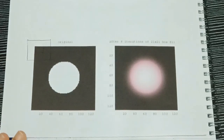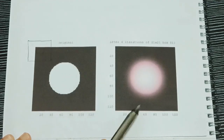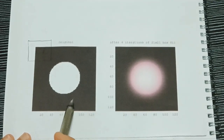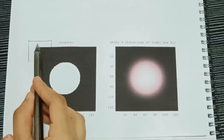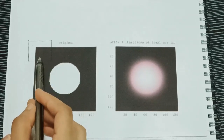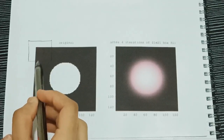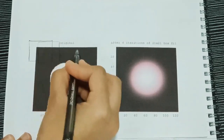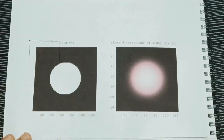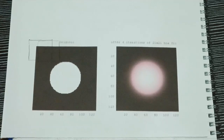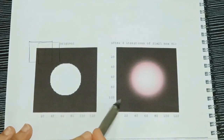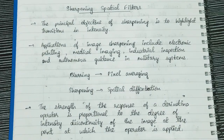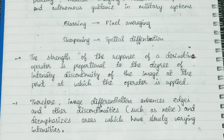Now if pixel averaging can give us a blurred image, how do we reverse the process to sharpen the image? What we are doing in pixel averaging is taking the sum of all pixel values and dividing by the total — this is comparable to integration. So if integration gives us a blurred image, to reverse it we do differentiation. That's why for sharpening we use spatial differentiation.